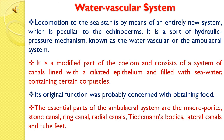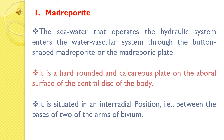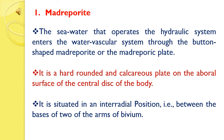The essential parts of the Ambulacral System are the Madreporite. The sea water that operates the hydraulic system enters the Water Vascular System through the button-shaped Madreporite or the Madreporic Plate. It is a hard, rounded and calcareous plate on the aboral surface of the central disc of the body. It is situated in an interradial position, that is, between the bases of two of the arms.